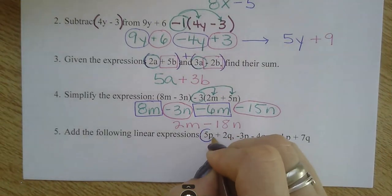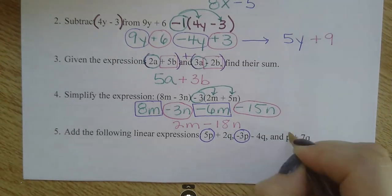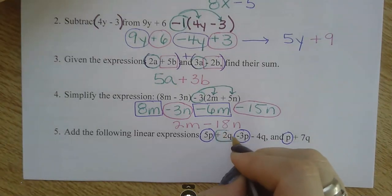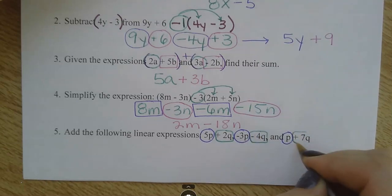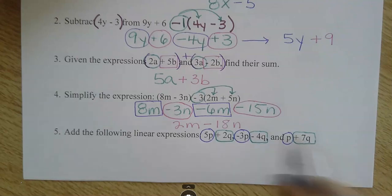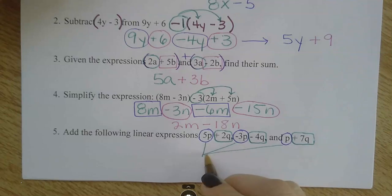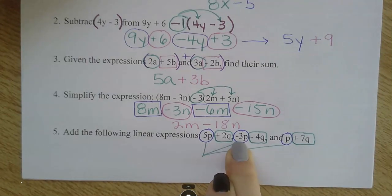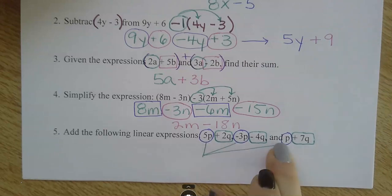I'm going to find my p's, my p's, and my p's. And I'm going to find my q's: 2q, negative 4q, 7q. Putting them together — all my p's: 5 minus 3, and then plus one more. So 5 minus 3 is 2, plus 1.